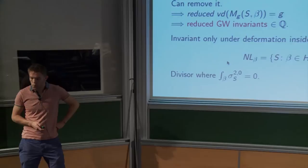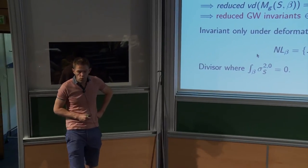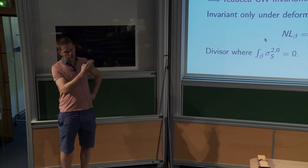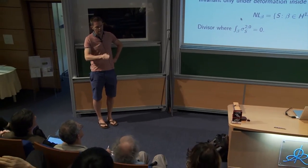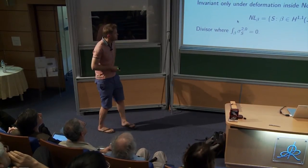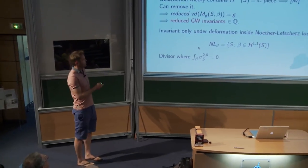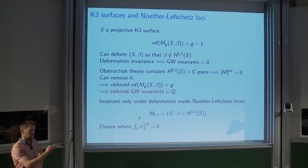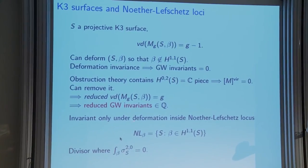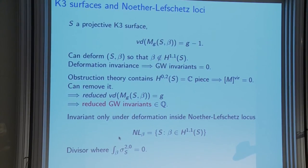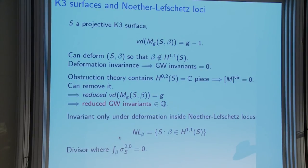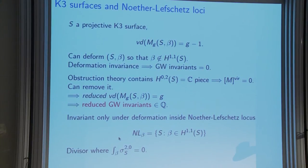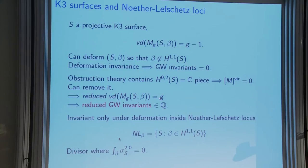These reduced invariants are deformation invariants as long as you move the K3 inside the Noether-Lefschetz locus — the divisor in the moduli space of K3s where the holomorphic two-form pairs to zero against the curve class. For example, an elliptic K3 has genus-one elliptic fibers with a one-dimensional moduli space of elliptic curves; deforming out of this locus destroys the elliptic structure. Within the Noether-Lefschetz locus the moduli space is one-dimensional; there are 24 singular fibers giving genus-zero curves, which you can count to get 24 — one of these reduced Gromov-Witten invariants.